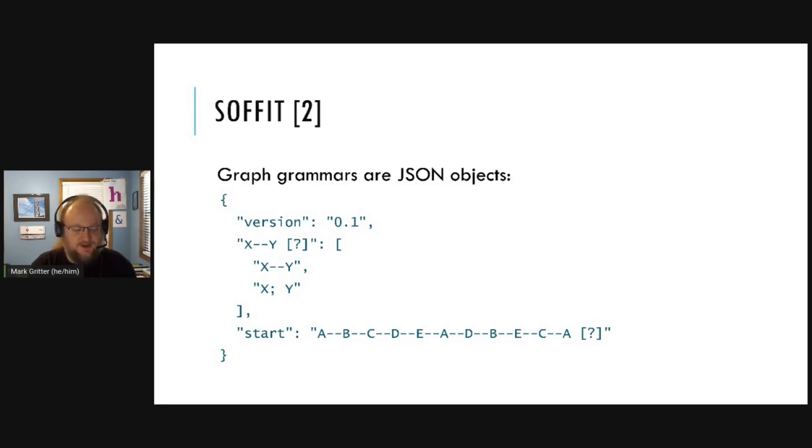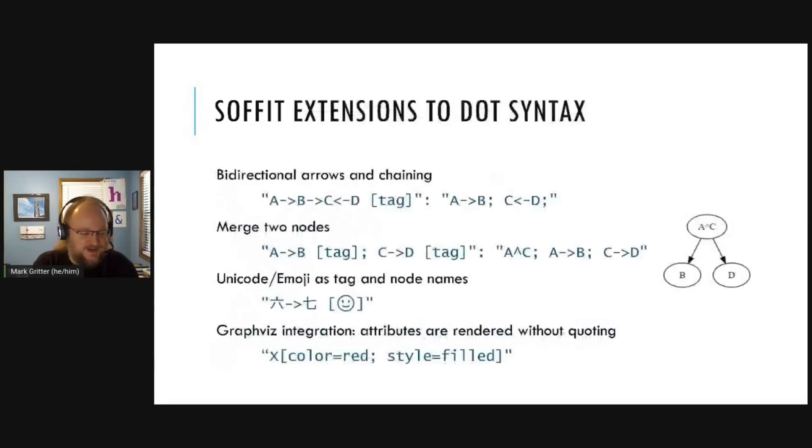Following Tracery's design, and maybe this wasn't the best idea, graph grammars in Soffit are JSON objects. The left-hand side is the key, and the right-hand side is the value or a list of values, each of which could be used. So here's a simple Soffit grammar that generates a random graph with five vertices. It starts out with the complete graph described here in the start tag. All the edges marked with question marks. Then the rule is take an edge with a question mark and either keep it or remove it. So pretty simple. I like that this is very compact. There are a few additions to the dot syntax. Edges can be chained together. That's not valid in dot, but it helped make compact representations or they can be written in the opposite direction for clarity.